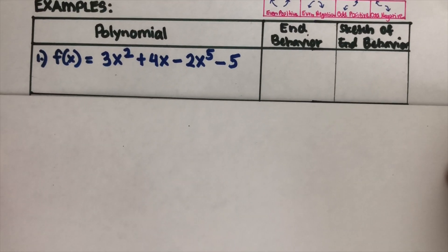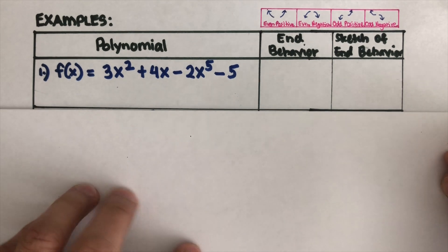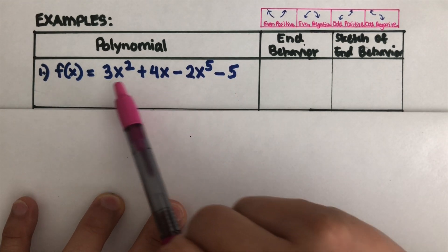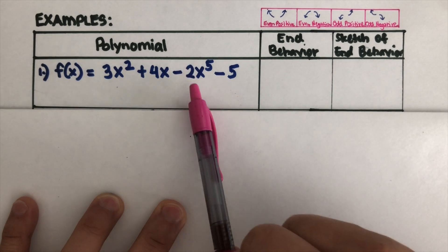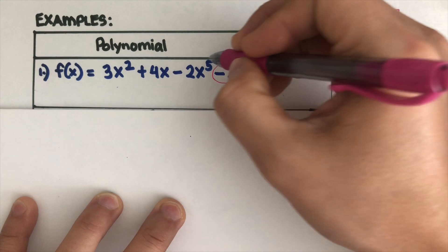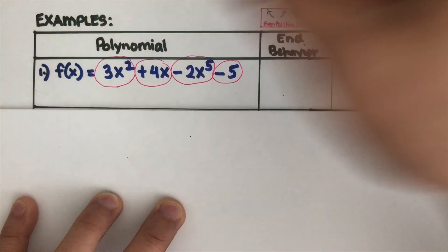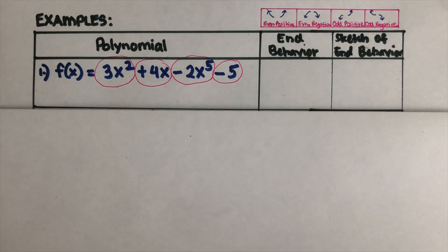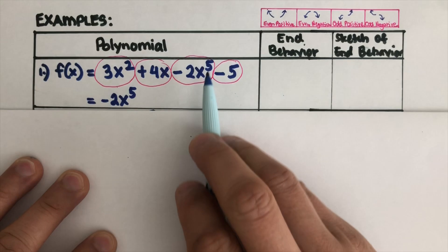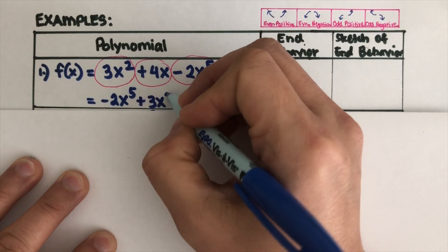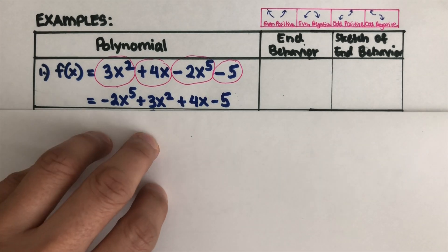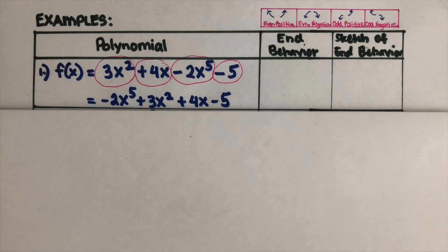Let's take this first example. The first thing we're going to do is look at the equation. In order to determine the end behavior, we need to arrange the terms in descending order — that means from the highest exponent to the lowest. So this polynomial function can be rewritten as: negative 2x to the fifth, plus 3x squared, plus 4x, minus 5.